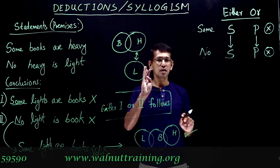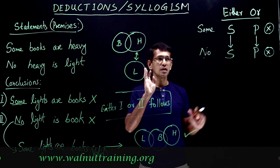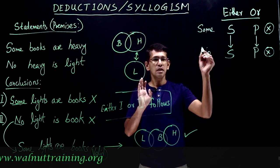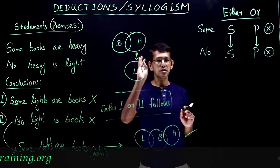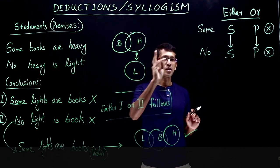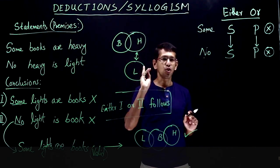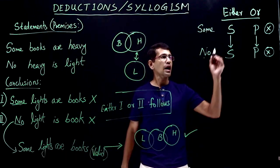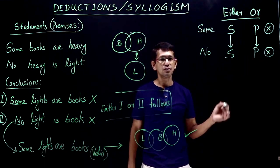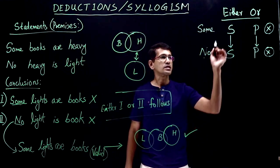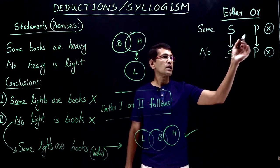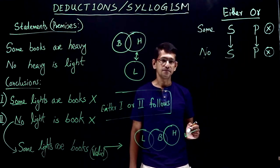So what are the conditions? It must be a some-and-no pair. One must be some, the other must be no, and both do not follow. Then subject must be subject and predicate must be predicate.